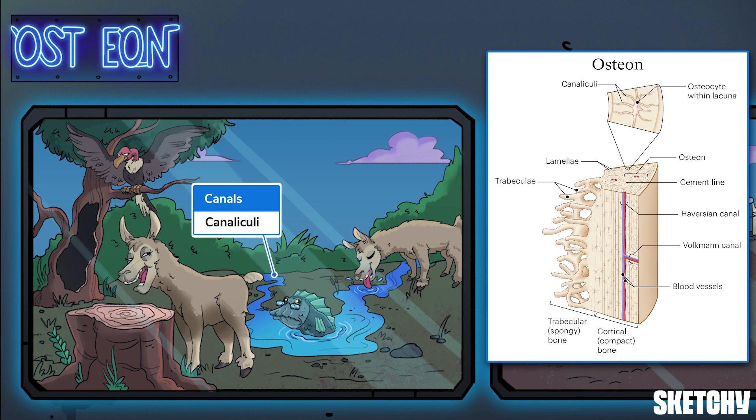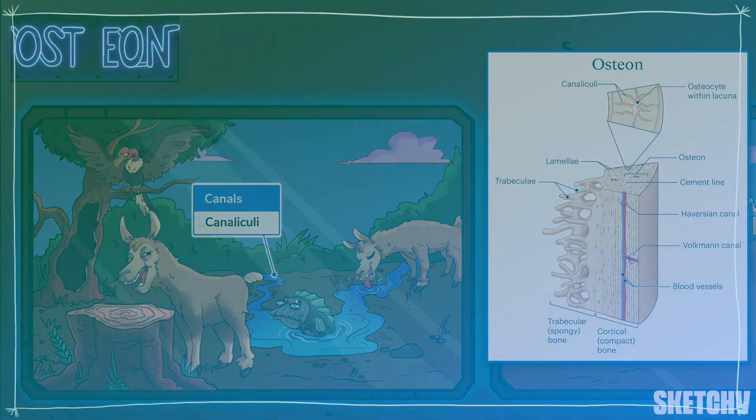Osteocytes themselves extend along the canaliculi and exchange nutrients and waste through gap junctions.